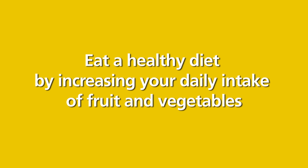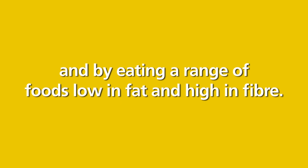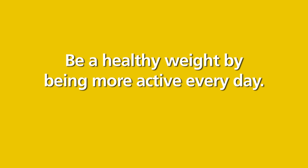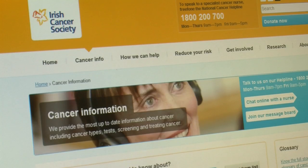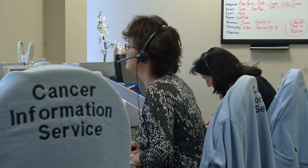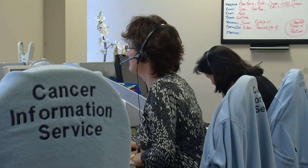Thirdly, look at your diet — you should be eating plenty of fruits and vegetables and foods that are high in fibre, and try to limit the amount of sugar and fat you take in. Fourth, try to take regular exercise. Finally, if you notice a change in your body, go to your GP. Remember that a symptom is a sign that something is wrong, so it's important not to ignore it. If you want to learn more about how to reduce your risk of cancer, go to the reduce your risk section on our website, or call us on the national cancer helpline and speak to a cancer specialist nurse.